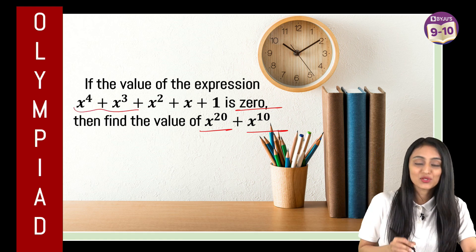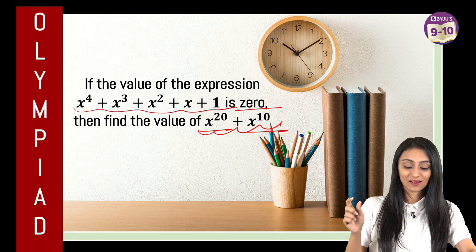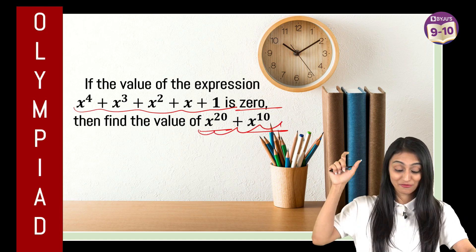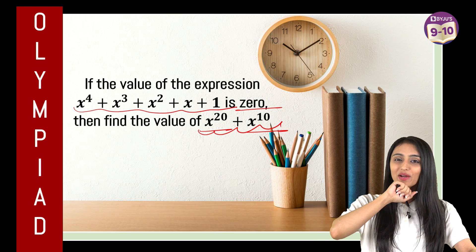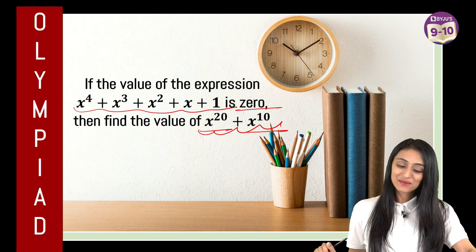Now we can see 5 terms over here and what we need to find out, there are basically only two terms in the final expression. So how do you find this out? This looks like a tricky one, right? But let's see how simply we can solve this.